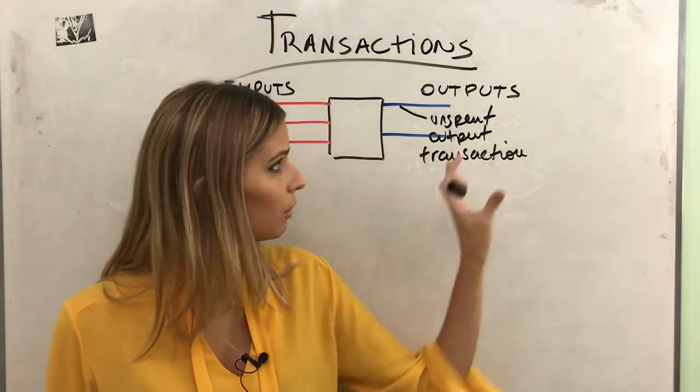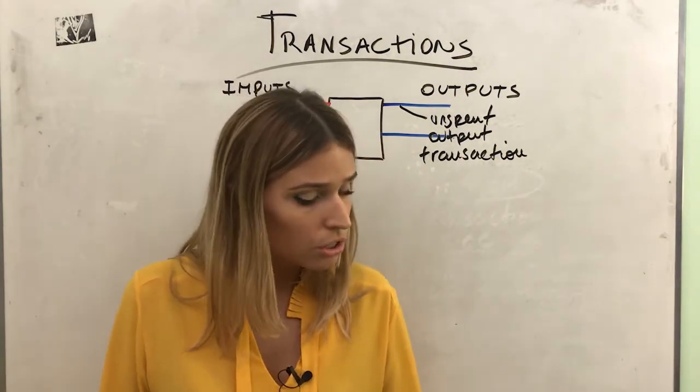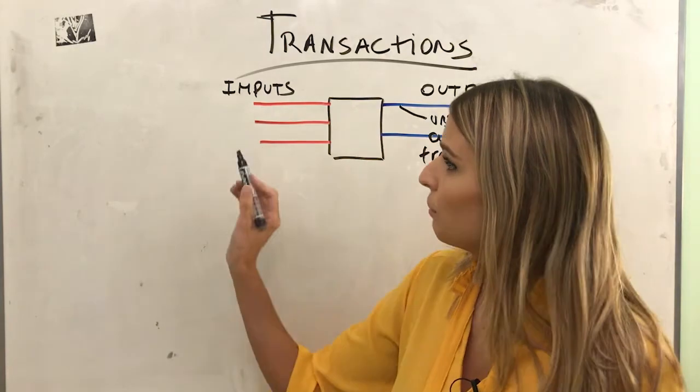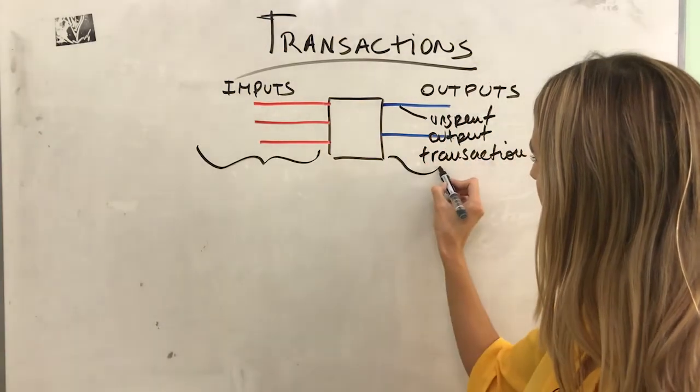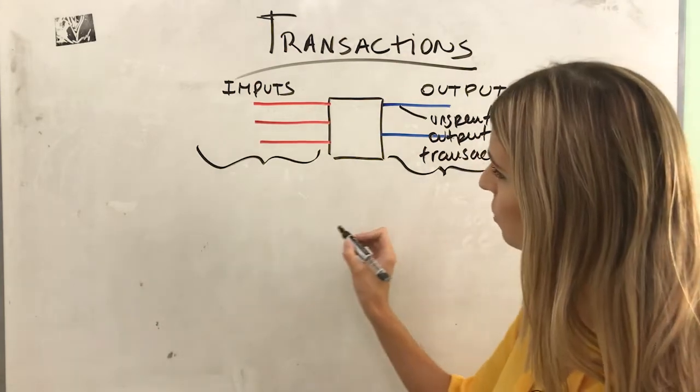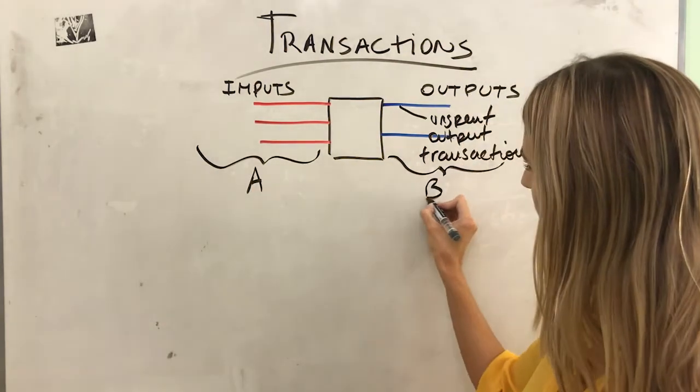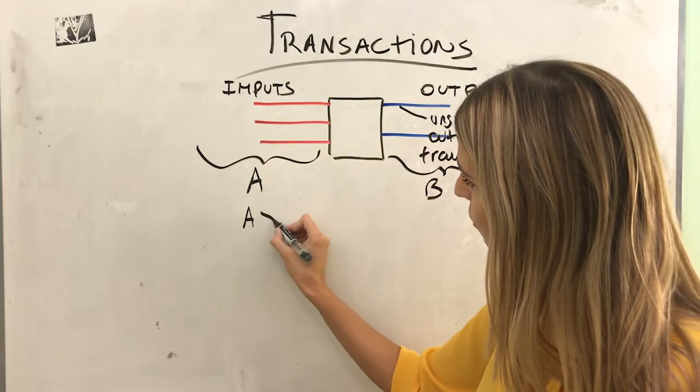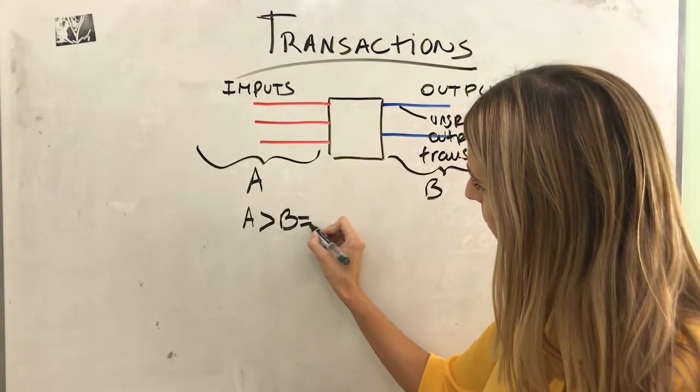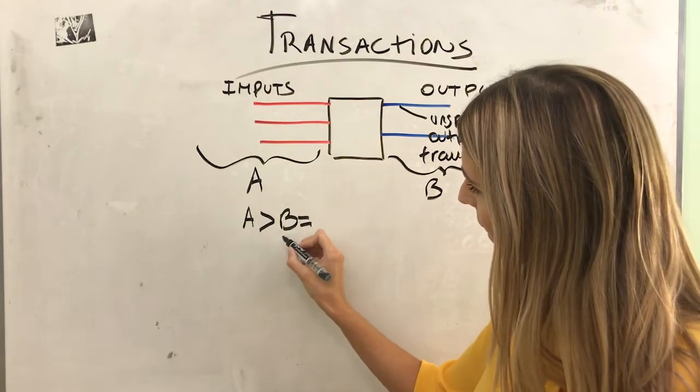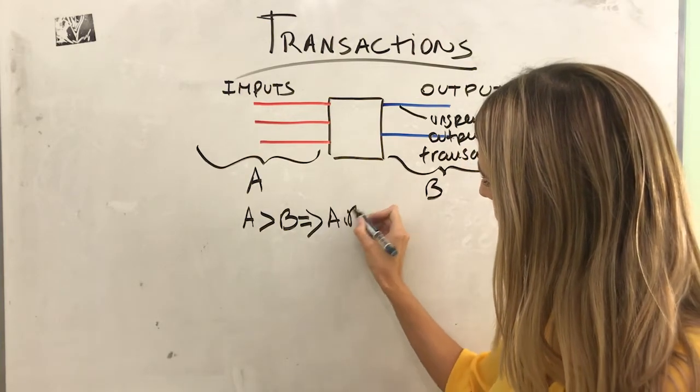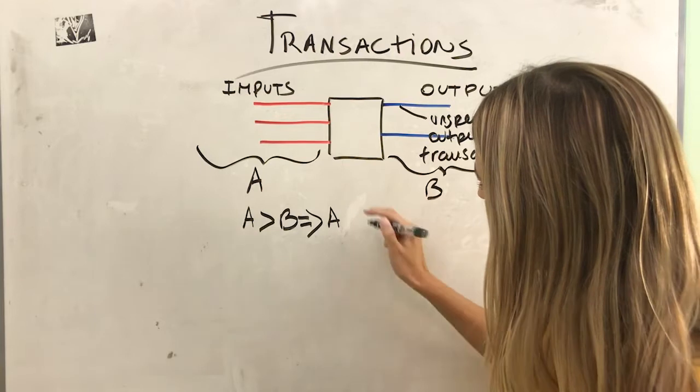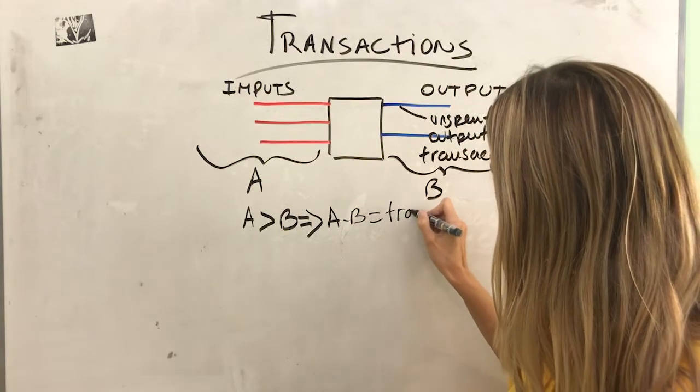So whenever I have clarified these conditions, as I said before, the sum of the inputs has to be greater than the outputs. So A, this is B, A has to be greater than B. And we can also say that the difference between them both is the transaction fee.